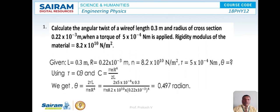Substituting the values: θ = [2 × 5×10⁻⁴ × 0.3] / [π × 8.2×10¹⁰ × (0.22×10⁻³)⁴]. On calculating, we get θ = 0.497 radians. This is the value of the angular twist after calculating all the given values.